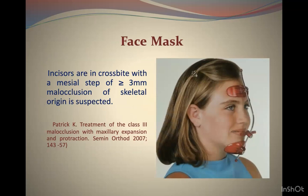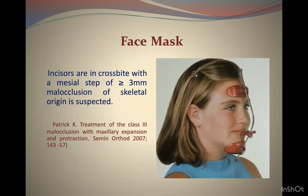Face mask is indicated when the maxilla is at fault and the patient presents in early mixed dentition, with incisors in crossbite and a mesial step of 3mm or more of Class 3 malocclusion. The face mask applies heavy forces to the mid-face to advance the maxilla anteriorly, connected through elastics at hooks placed distal to the canines. Effective in primary, mixed, and early permanent dentition; optimal timing is eruption of maxillary incisors. Forces needed: 300-600 grams per side for 12 hours.